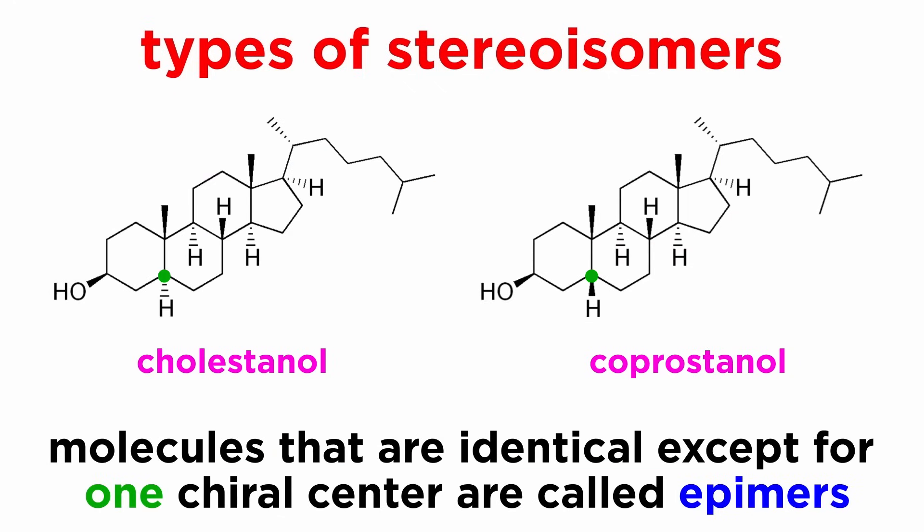To provide just one more important term: if a molecule has numerous chiral centers, changing the configuration specifically at only one chiral center will produce an epimer of that molecule — such as with these two steroids, cholestanol and coprostanol, which have the same configuration at 8 out of 9 chiral centers. So epimers are a subcategory of diastereomers.